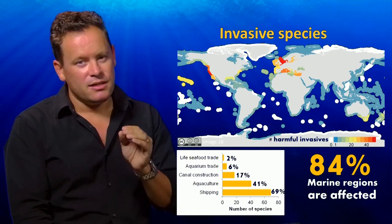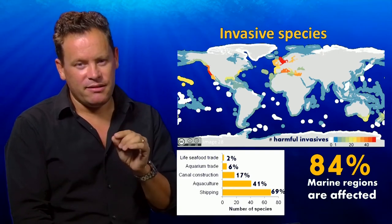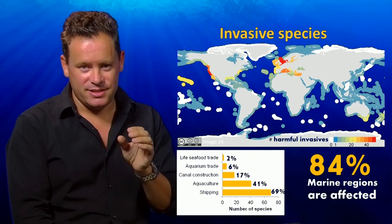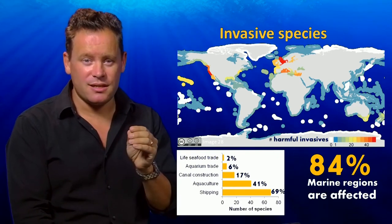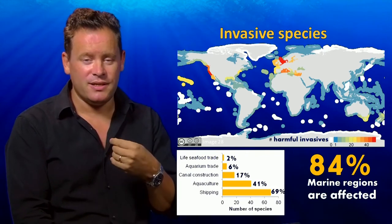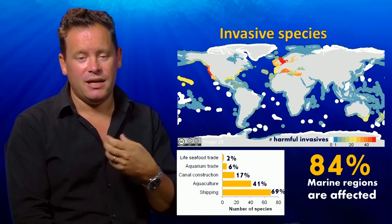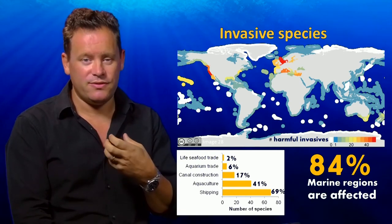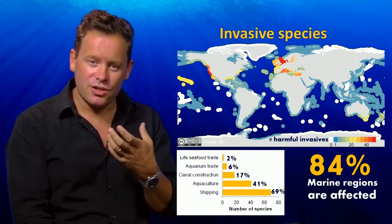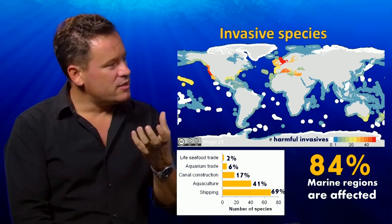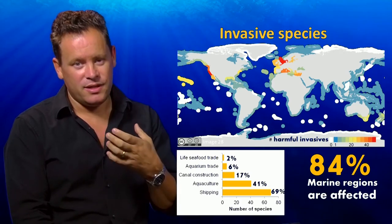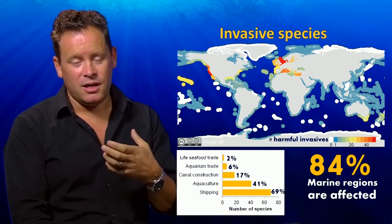You can see that invasive species are really concentrated in areas where there's a lot of human maritime activity. On the west coast of the United States and in the North Sea, for example, those are areas where there's massive shipping activity and real global hotspots for the emergence of invasive species. Looking at the causes, 69% of known invasives are attributed to shipping.